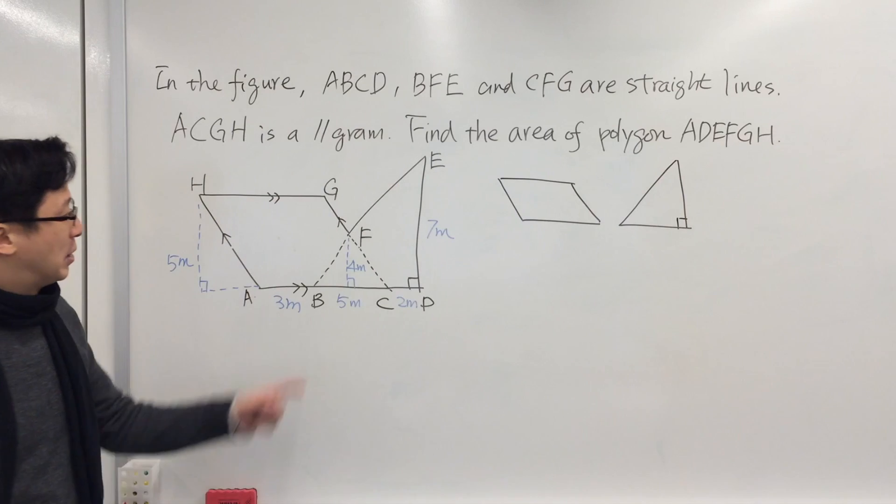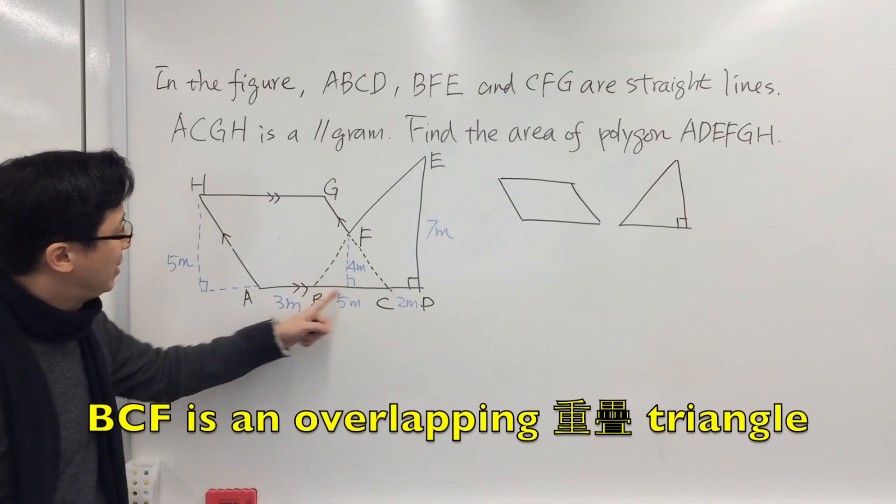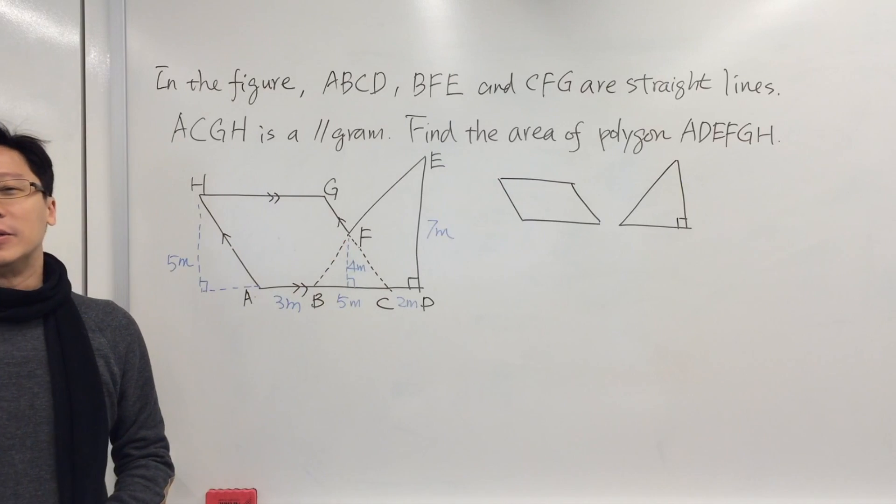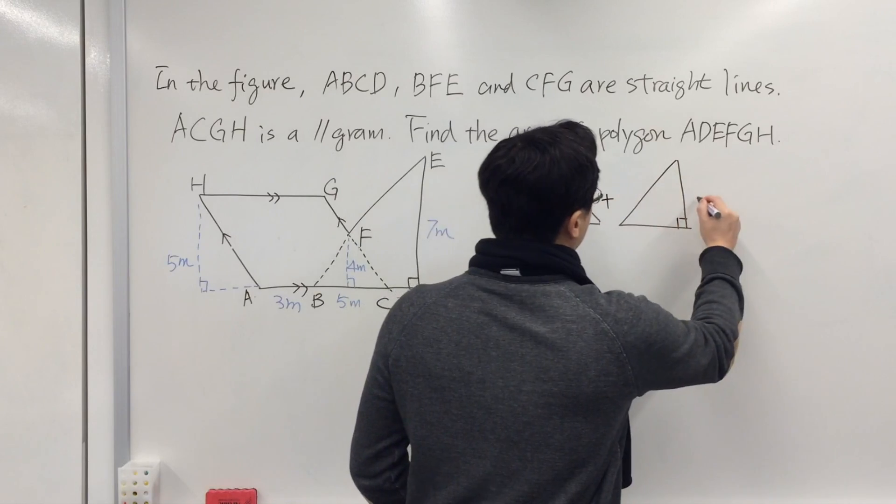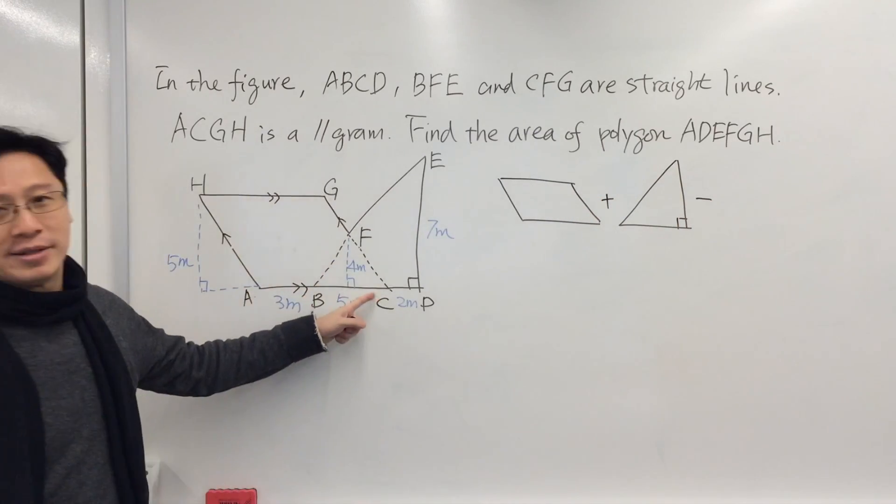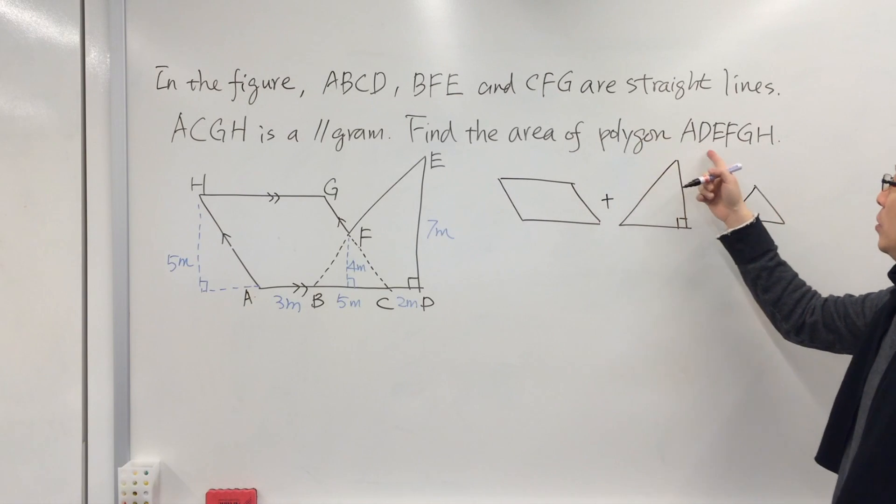But you can observe that there is an overlapping area. BCF is the overlapping area, which means we have to subtract this part BCF to find the area of polygon ADEFGH.